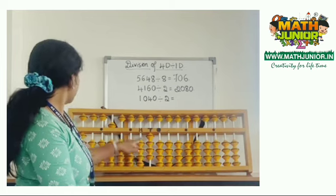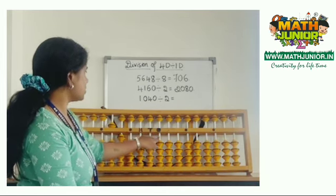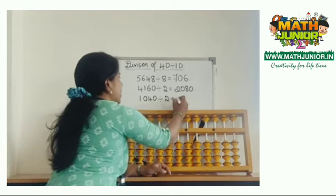Then I'm left with 04. 2 times 2 is 4. Then I'm left with 00. 2 times 0 is 0. My final answer is 520.